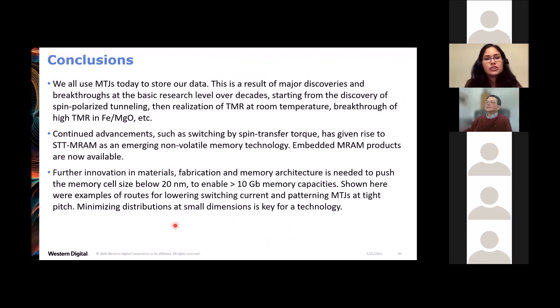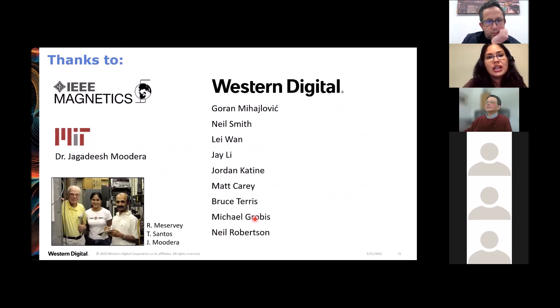So I want to conclude here. My message for today is that we're all using magnetic tunnel junctions to store data. This is a result of major discoveries and breakthroughs at the basic research level over decades, starting from the discovery of spin polarized tunneling, then seeing TMR at room temperature and so forth. And advancements continue. Now we have switching by spin transfer torque and that's given rise to STT MRAM as a non-volatile memory, and there are embedded products now available. Further innovations need to happen in materials and fabrication and memory architecture to push towards even higher density STT MRAM with cell sizes 20 nanometers and below. I showed you some examples here from Western Digital where we found ways to lower the switching current and to pattern MTJs at tight pitch. So thank you very much for your attention and I want to thank the folks here.